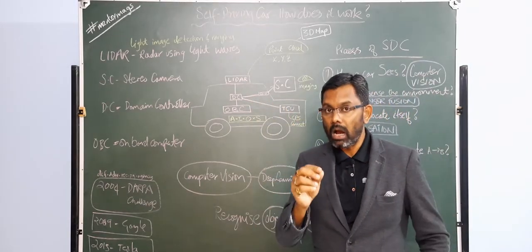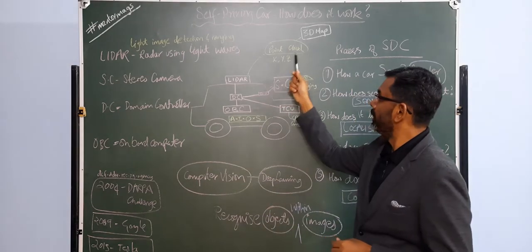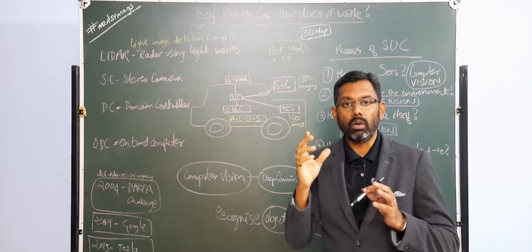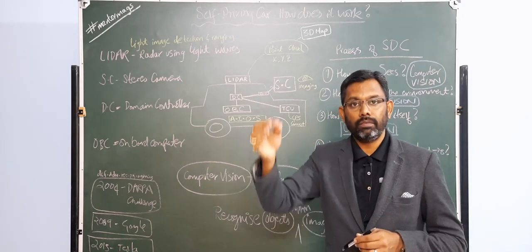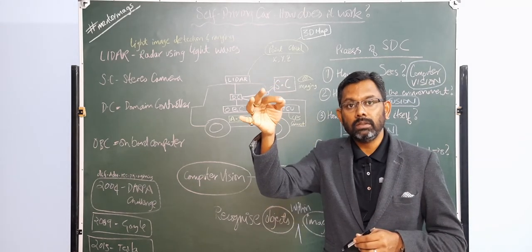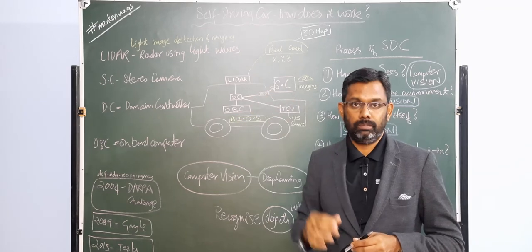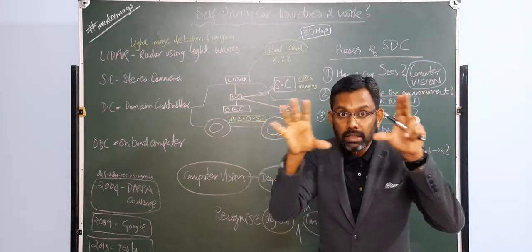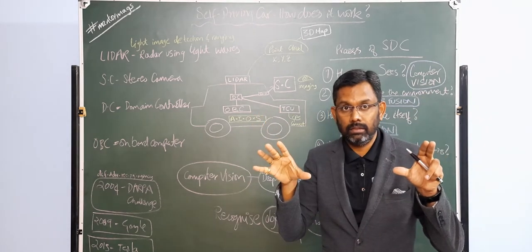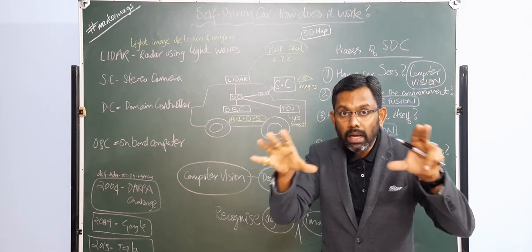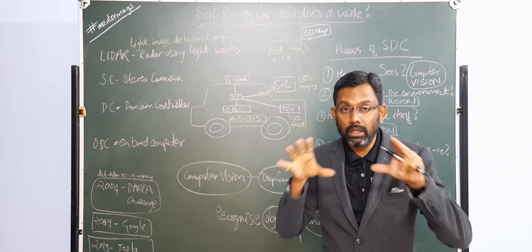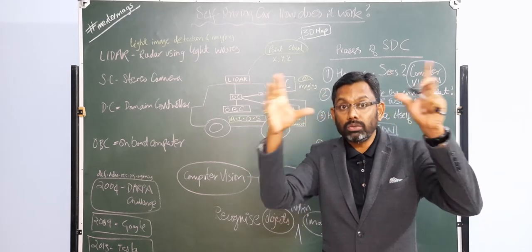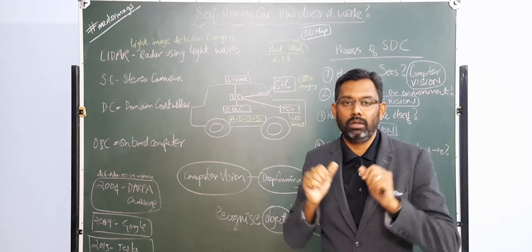What LIDAR does is it gives an output called as point cloud, which is the x, y, and z coordinate of a spatial image. The objective of LIDAR is to be able to see and visualize the space in all three dimensions and create what is called a point cloud map of the real world.